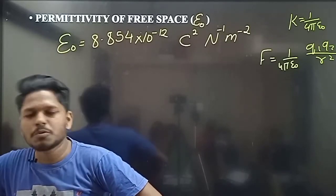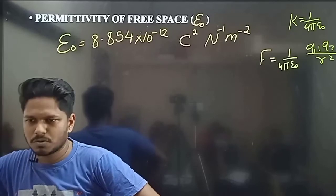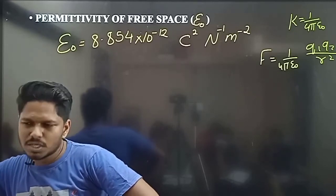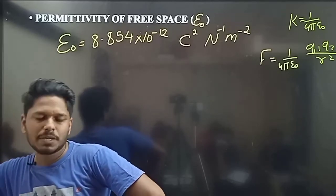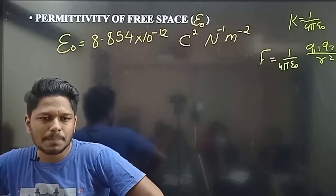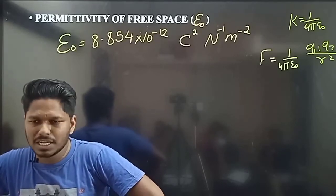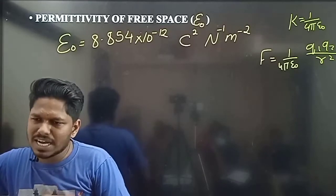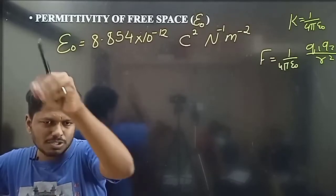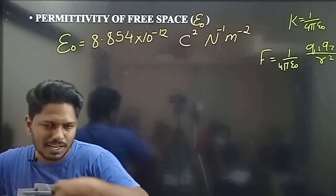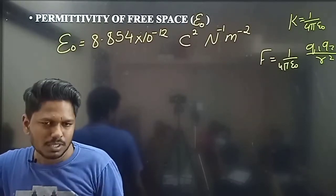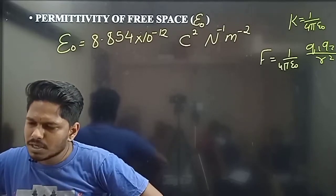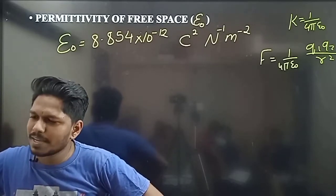If you have a medium, the permittivity changes. For vacuum it's epsilon naught, but different mediums have different permittivity values. If you don't have a medium, you use the free space permittivity.